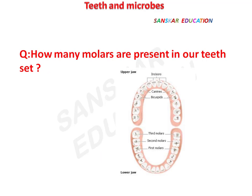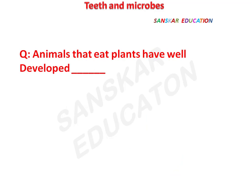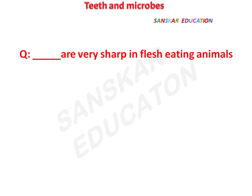How many molars are present in our teeth set? Answer: 12 molars. Animals that eat plants have well-developed molars. Canines are very sharp in flesh-eating animals.